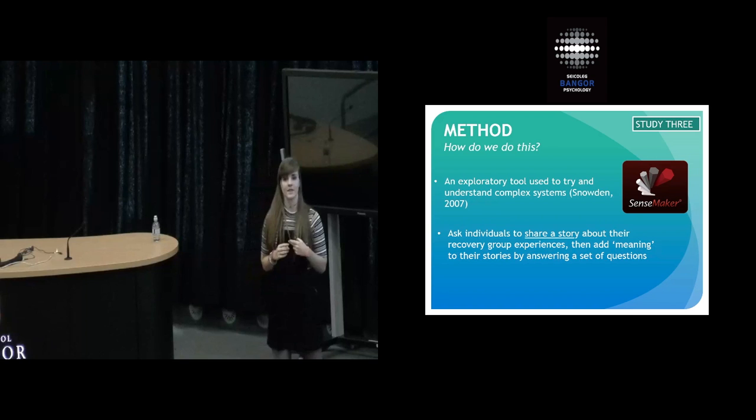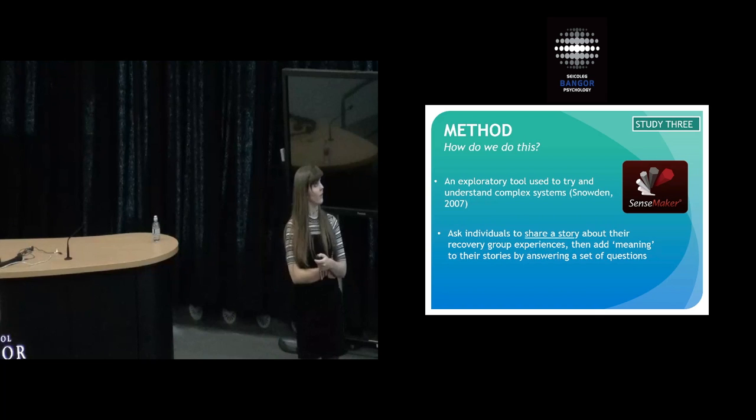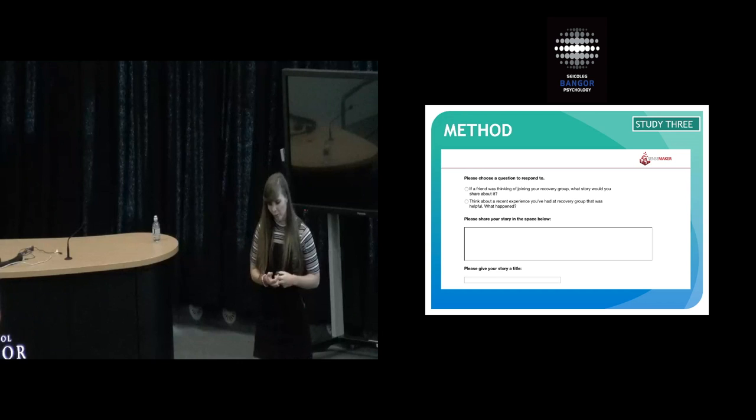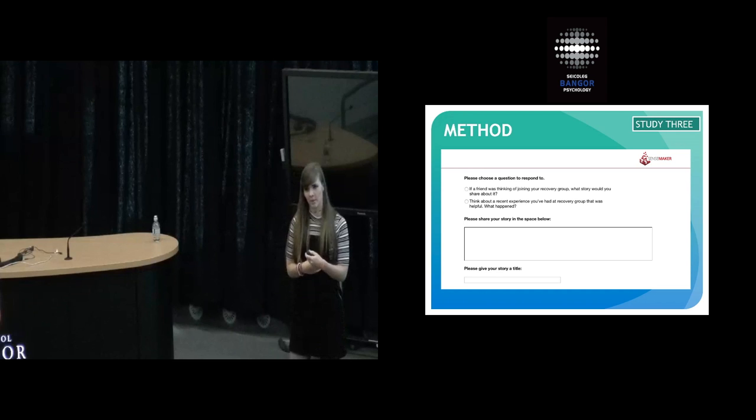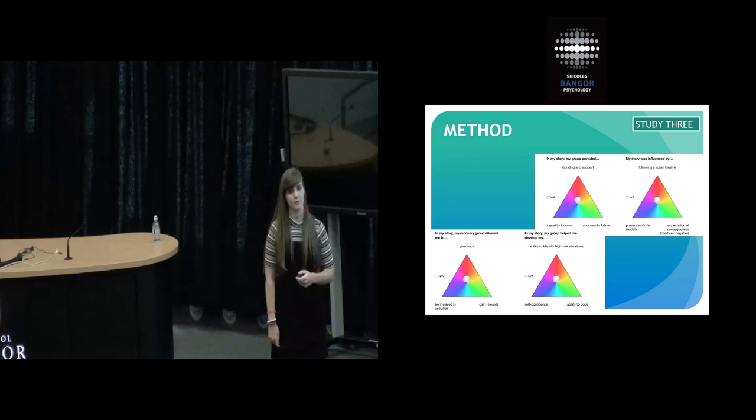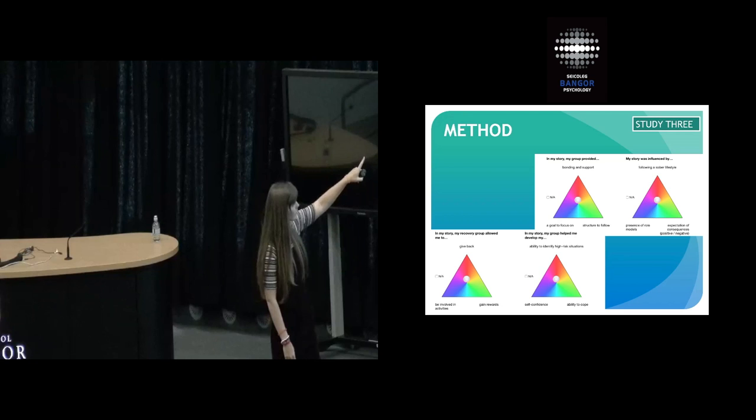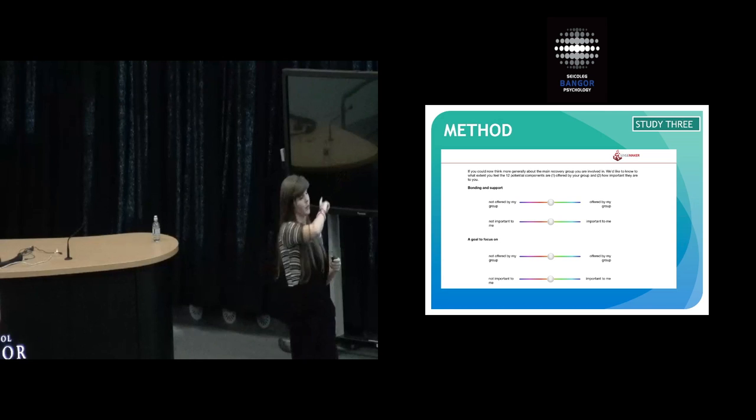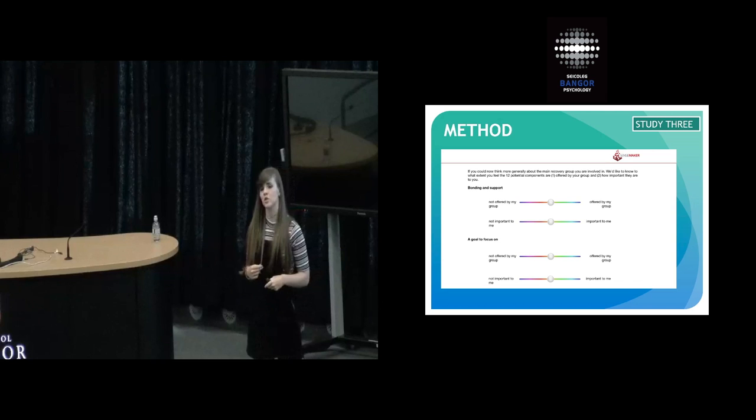How did we do this? We used SenseMaker, which is an exploratory tool we use to try and understand complex systems, and it's never been used in the addiction field before. What it basically asks individuals to do is to share a story about their recovery group experience and then add meaning to their story by answering a set number of questions. As an example, this is an online survey, but what we found is that most individuals in this population didn't necessarily have access to computers, so most of this has been done in paper copies, but I'll show you the online version. They answer a question such as, if a friend was thinking of joining your recovery group, what story would you share about it? Then they'll share a story. They're asked to quantify their answer on a number of factors. On these triads, there's the 12 components, and they're asked to drag the bubble in the middle to which component they think is most important. Following this, they then get asked for each of the 12 components, how important is it to you, and how much is it offered by your group? They then also have to answer a number of demographic questions and some well-established recovery-based questionnaires.